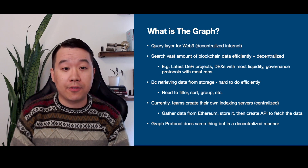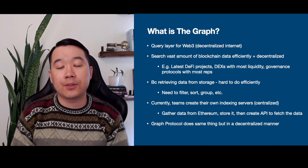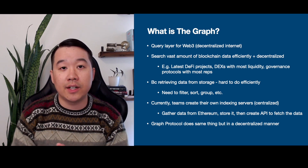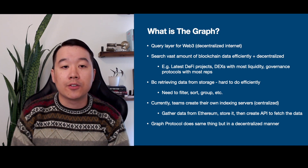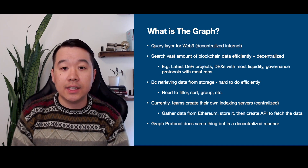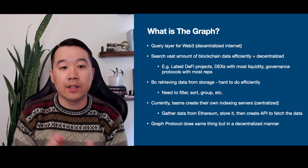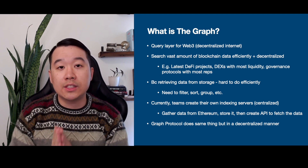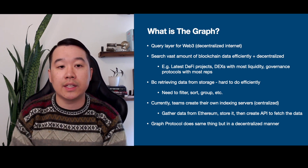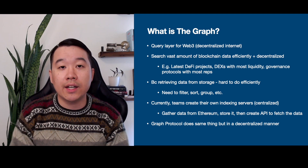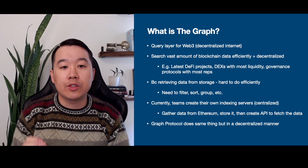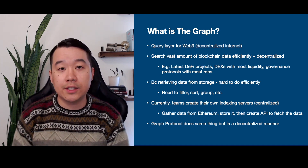So what is The Graph? Essentially, it's a query layer for Web3, which is just a fancy name for the decentralized version of the internet. What they want to do is help people search for vast amounts of blockchain data efficiently and in a decentralized manner. Some example queries you can run: what are the latest DeFi projects, which decentralized exchanges have the most liquidity, which governance protocols have the most representatives.